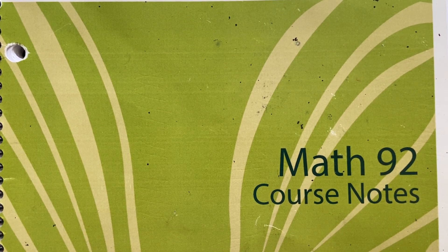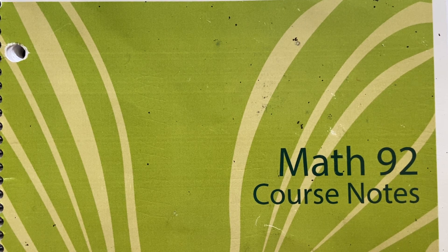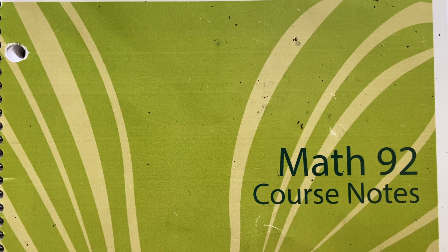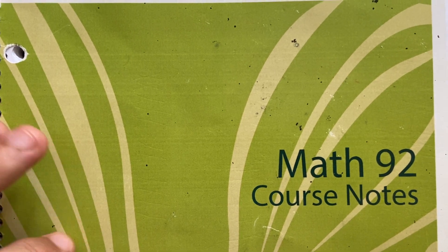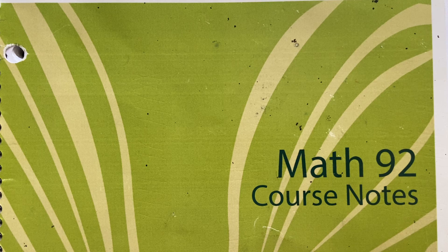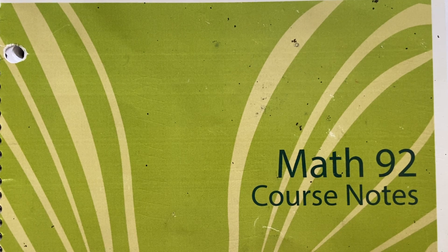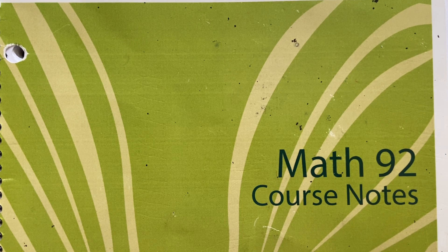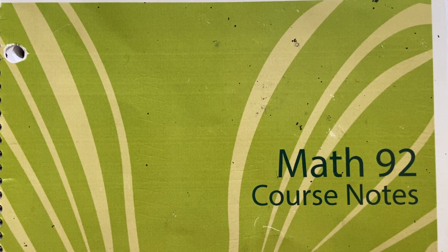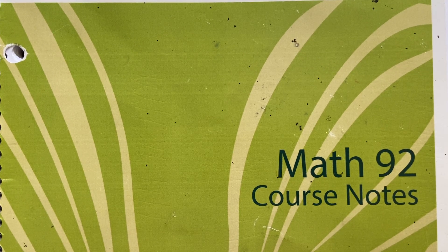Hi everyone, this is Math92. This is Shane Briggs, your professor. I'm going to go through review sections one and two. This is the course notebook — it'll look like this if you get it from the bookstore. Keep in mind you can print this out, or even spend zero money by looking at the PDF. I've made the PDF available for download totally free. In the bookstore this is about 30 bucks.